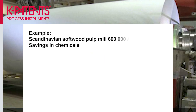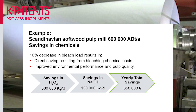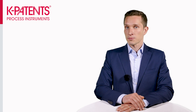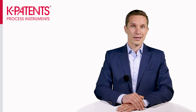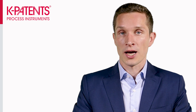What about the savings in chemicals? In the same standard size pulp mill, cleaner pulp means less chemicals in bleaching. By decreasing the bleach load by 10 percent, the mill gets direct savings resulting from the bleaching chemical costs. In addition, the decreased bleach load improves environmental performance and enhances the pulp quality. The investment might seem significant; however, the benefits obtained greatly enhance the productivity of the mill in such a way that allows a rapid return on investment as soon as three months. For more information, visit kpatents.com.